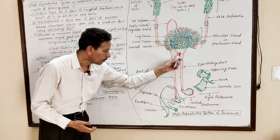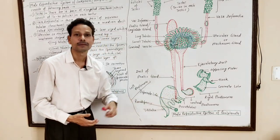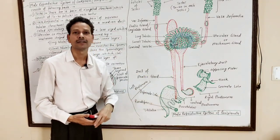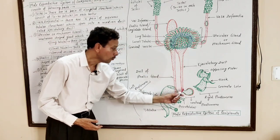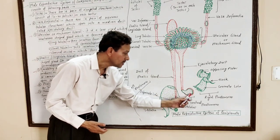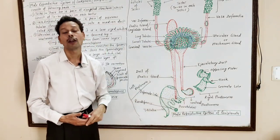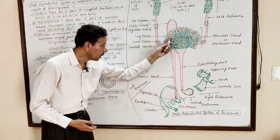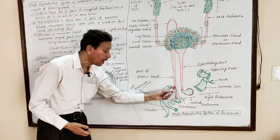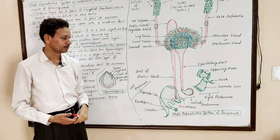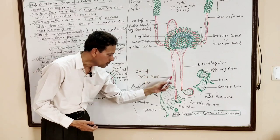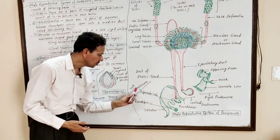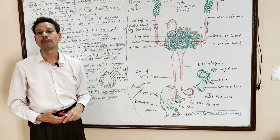The ejaculatory duct opens exteriorly through the ventral phallomere. The duct of the phallic gland opens outside through the left phallomere.